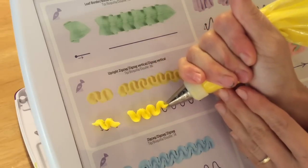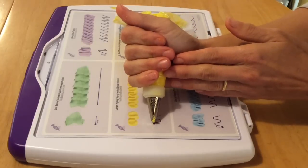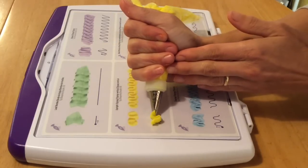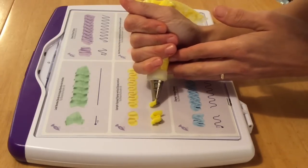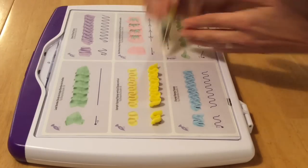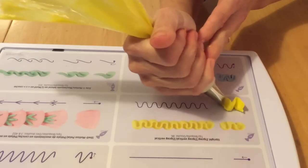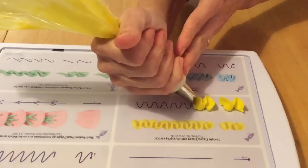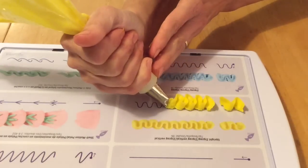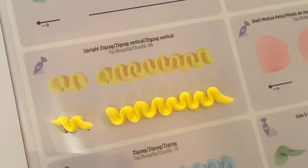What's cool about it is the star tip part gives it a nice wide base, and then the petal tip with this upright zigzag tapers off towards the top, giving you a nice three-dimensional effect. The trick with any zigzag technique is to maintain steady pressure and try to keep these zigzags of an even height.